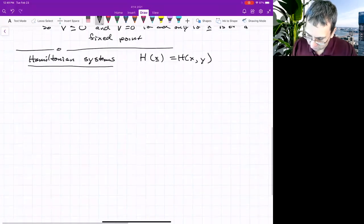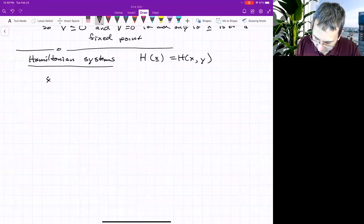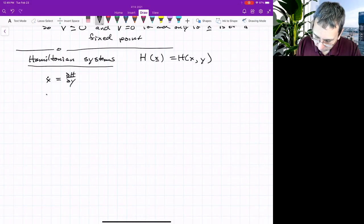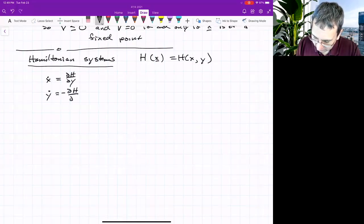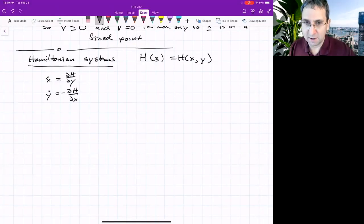A Hamiltonian system is one where x dot equals partial h partial y, and y dot equals negative partial h partial x. So any system where you have this would be called a two-dimensional Hamiltonian system.